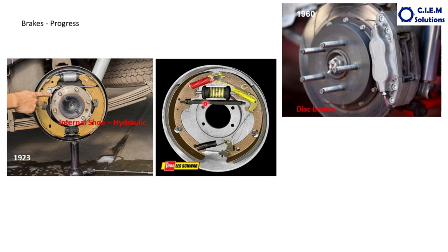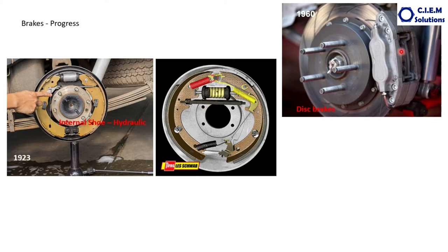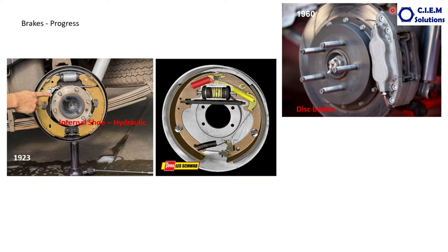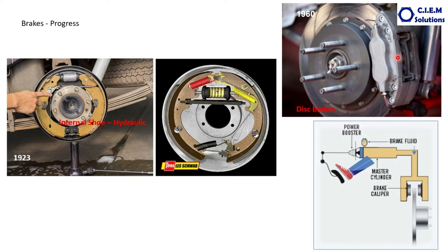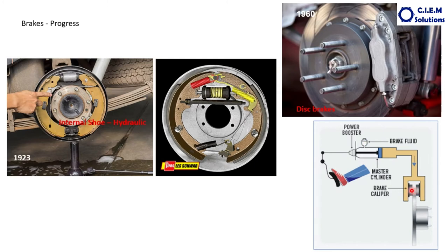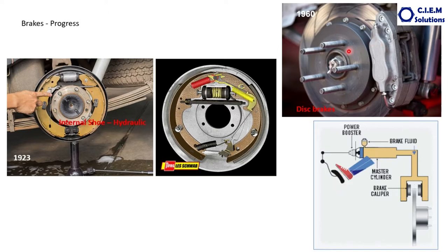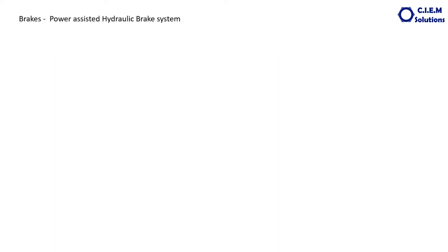By 1960, as vehicle technology advanced and vehicle speeds increased, they developed a system called caliper disc brakes. In majority of vehicles today, the front wheels are fitted with caliper disc brakes, while the rear wheels are fitted with drum brakes with the internal expanding shoe. The caliper mechanism contains pistons; when oil is pumped from the master cylinder, the caliper pistons expand and hold the rotating disc, similar to how wheel cylinder pistons work.